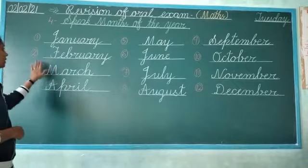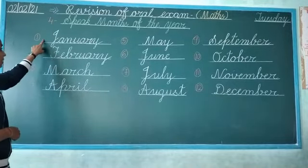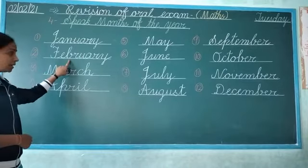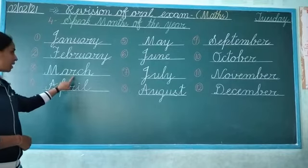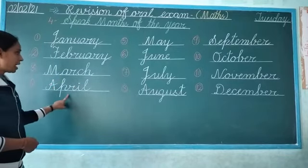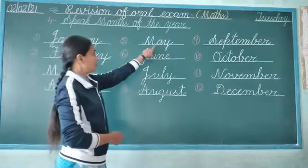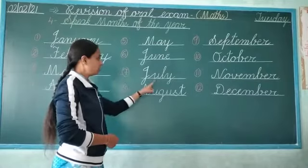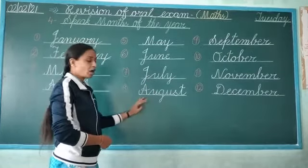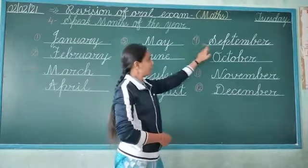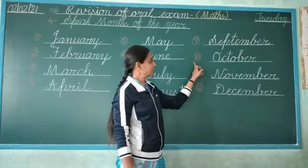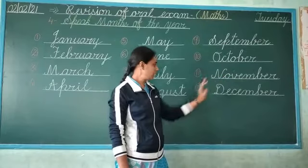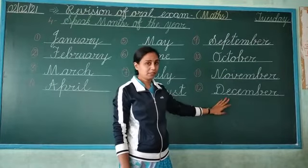So let's learn our months. First: January. Second: February. Third: March. Fourth: April. Fifth: May. Sixth: June. Seventh: July. Eighth: August. Ninth: September. Tenth: October. Eleventh: November. Twelfth: December.